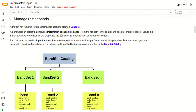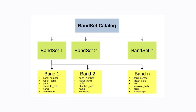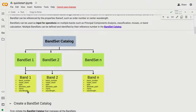Here we can see a brief scheme about how RemotiorSensus manages raster bands. Band sets are one way to create input for the tools of RemotiorSensus. Basically we create a band set catalog, which is a catalog of band sets, where each band set is a set of single bands. Each band is a raster file which has several parameters and variables, such as the band number, the path of the file, the name of the raster, the center wavelength of the band, and several parameters useful to identify the bands in a band set.